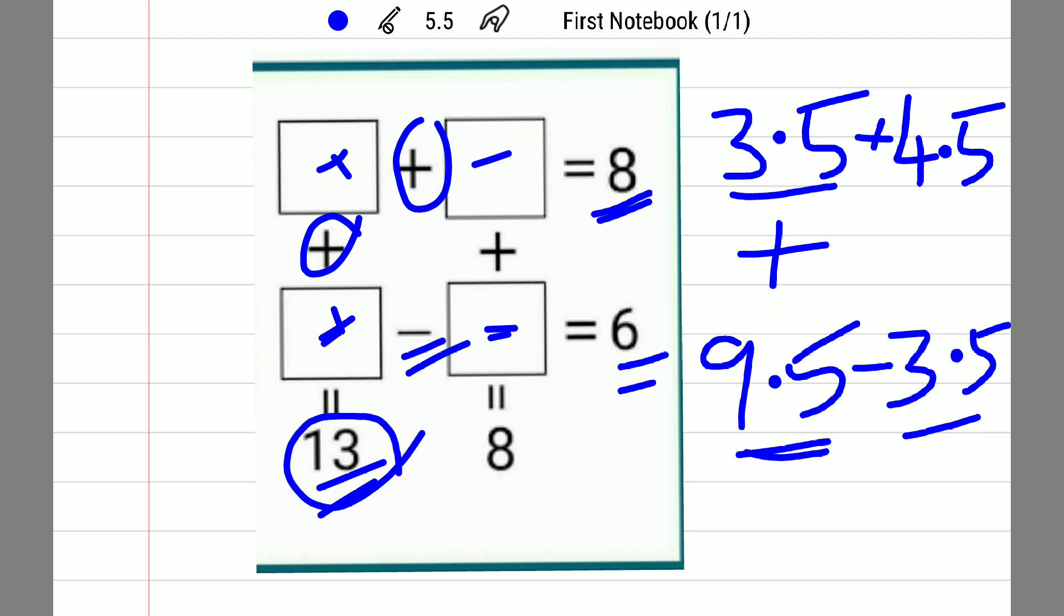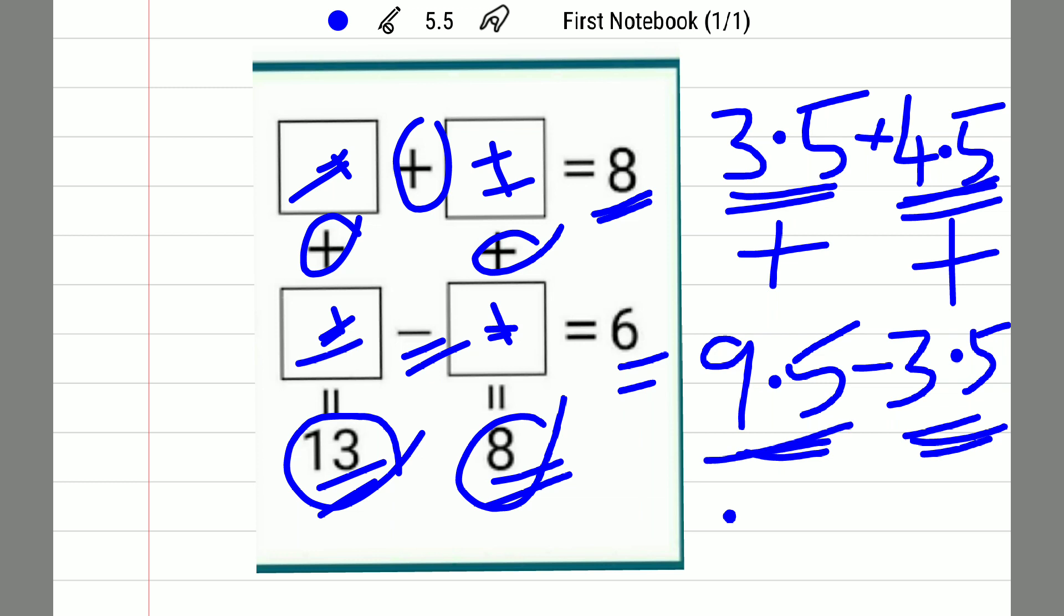Now for the second column, this block value and this block value, if I add them should equal 8. Let's add these two: 4.5 plus 3.5 equals 8. So the answers are: first block is 3.5, second block 4.5, third block 9.5, and fourth block 3.5. This is the answer for this puzzle.